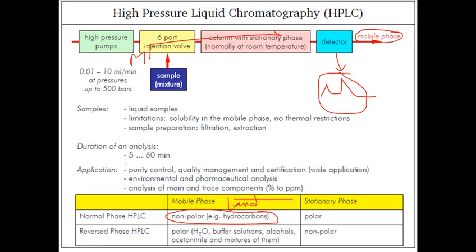The duration of this process is 5 to 60 minutes, similar to the previous case of 2 to 60 minutes. The HPLC column is more or less the same as the GC column, but in some cases GC columns are taller because they can be coiled, whereas HPLC columns are not coiled in that way.